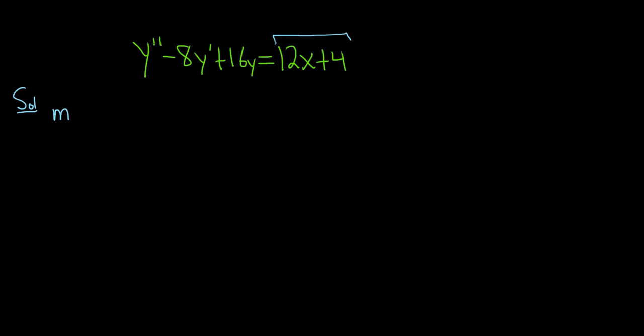Because there is a second derivative, we put m squared here. Then minus 8 is the first derivative here, so it will be m to the first power. And the 16y just becomes 16.